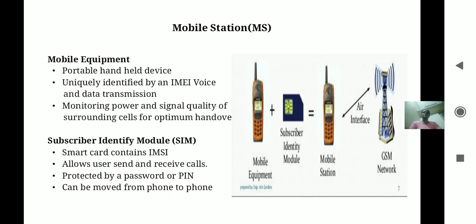Let's see the mobile station. Mobile station consists of physical equipment and the SIM card. It provides the air interface to the user in the GSM network. The MS also provides the receptor for SMS messages, enabling the user to toggle between voice and data use.